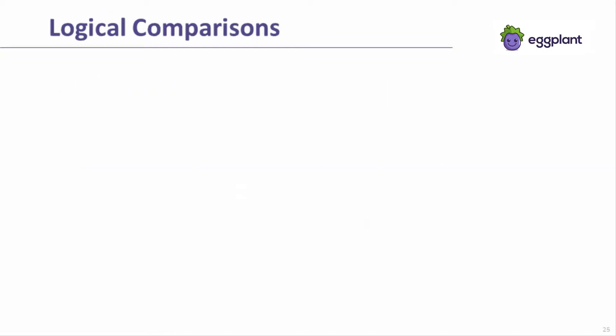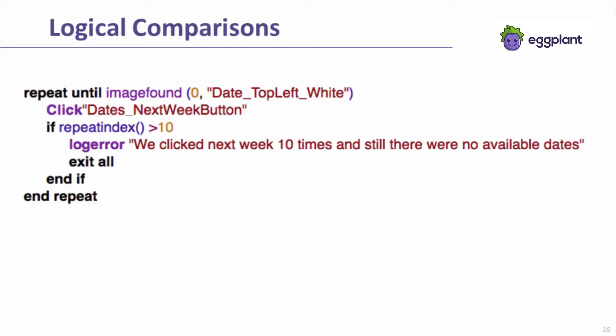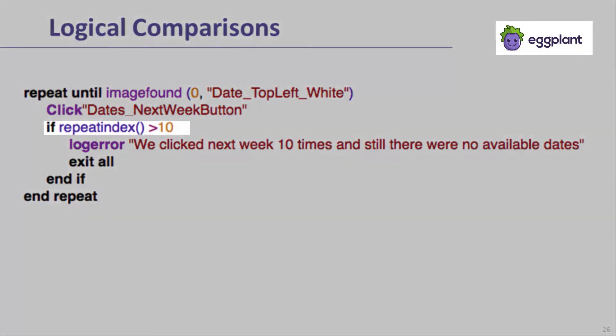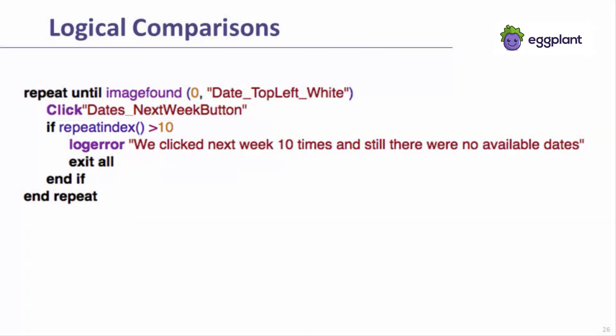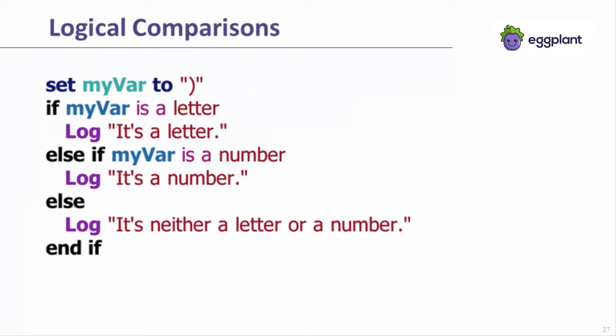Logical comparisons are useful for performing various types of validations, such as between an expected and actual data value, or when determining whether an undesirable condition has been met. In a logical comparison, a value is compared or parsed to determine whether that value meets certain criteria. Most often, a logical comparison happens within the context of a conditional statement or assert command. Here's an example within a conditional statement where the value of the repeat index function is evaluated to determine whether it's above 10. Here's another example where a value stored in a variable is evaluated according to whether it's a letter, a number, or neither.